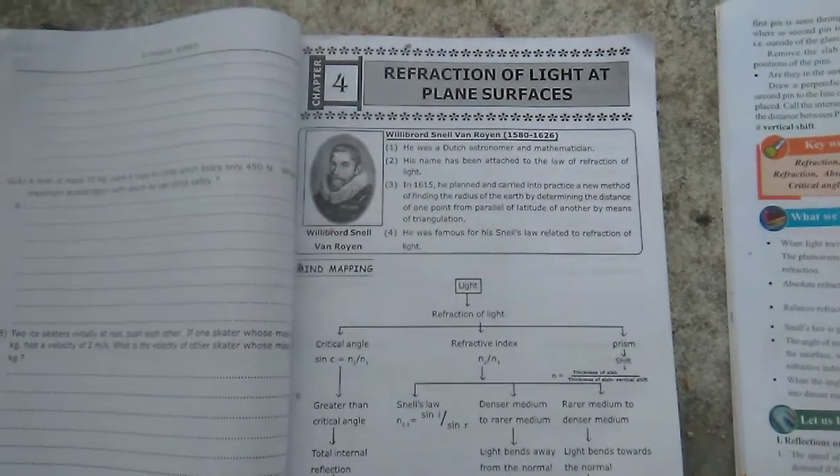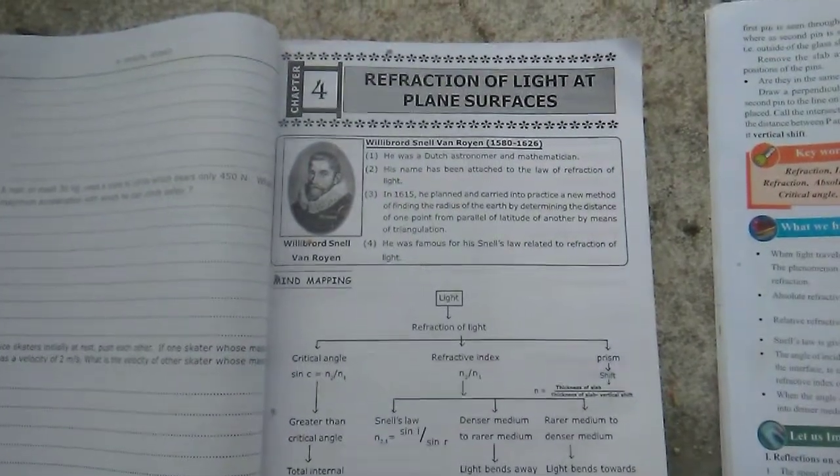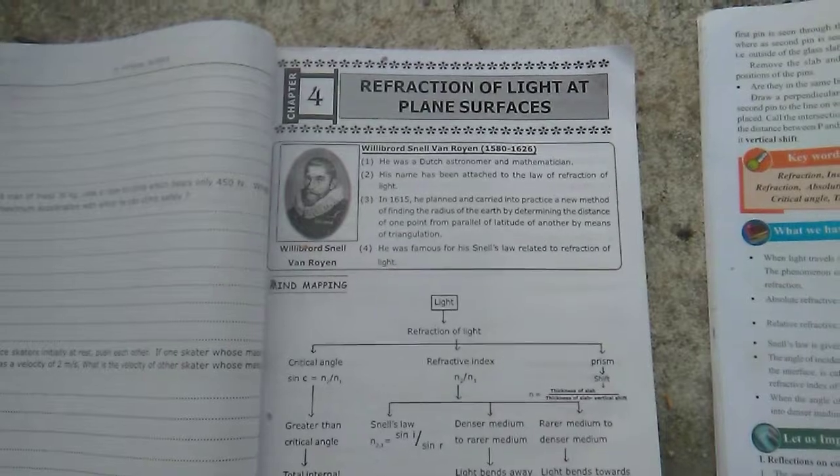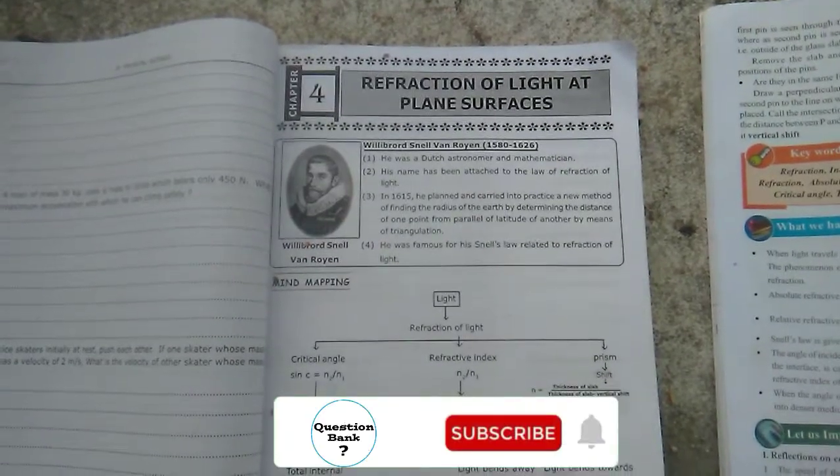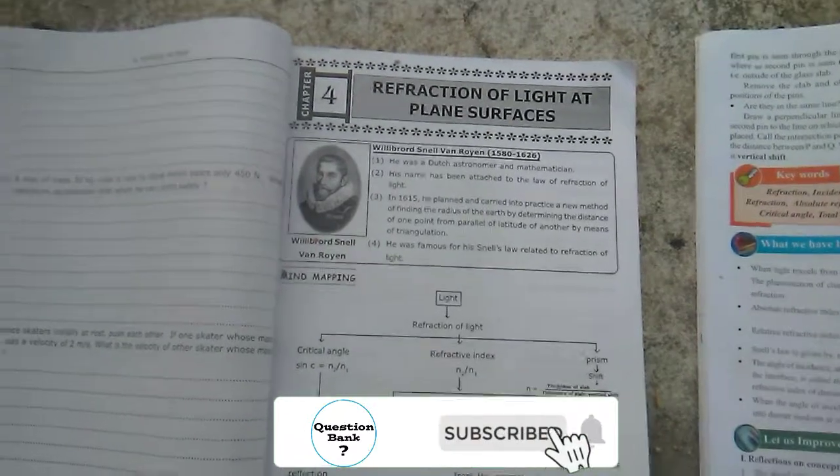Welcome to Question Bank. Today I am going to show chapter number 4, which is Reflection of Light at Plane Surfaces. We'll look at the keywords. Now we will see in the textbook how many keywords are there. Now you can see.